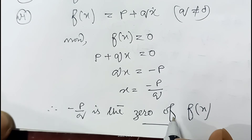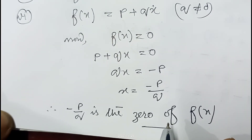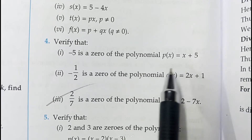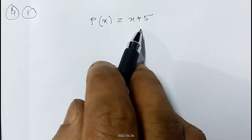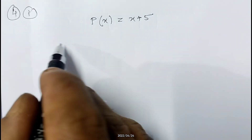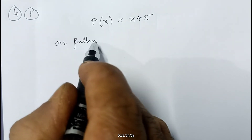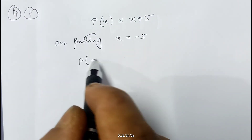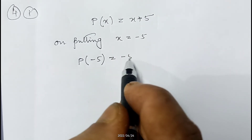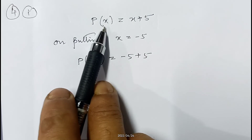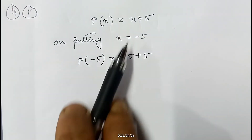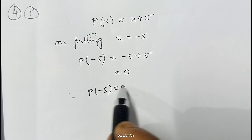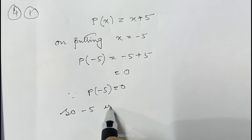I hope how to find the zero of a polynomial is now clear. Question 4: verify that minus 5 is a zero of the polynomial p(x) = x plus 5. On putting x equals minus 5, p(minus 5) equals minus 5 plus 5, which equals 0. Since p(minus 5) equals 0, minus 5 is a zero of the polynomial p(x).